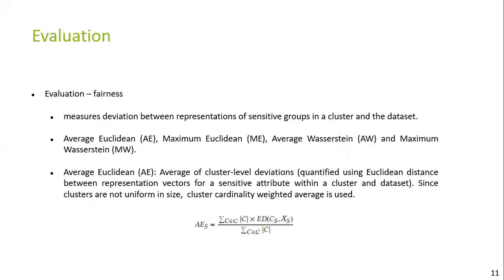Evaluating fairness: if clustering generates K clusters, for each sensitive attribute we compute the deviation of the representation vector for the sensitive attribute for a cluster from its representation vector for the dataset. Hence, average deviation for a sensitive attribute is the average of deviations across the clusters and maximum deviation for a sensitive attribute is the maximum of deviations across the clusters. This deviation is computed either using Euclidean distance or Wasserstein distance, giving four metrics: average Euclidean, maximum Euclidean, average Wasserstein, and maximum Wasserstein. Each of these metrics are reported for all the sensitive attributes.